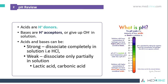Acids are generally hydrogen donors, and bases are hydrogen ion acceptors or they give up hydroxide ions in solution. Acids and bases can be either strong or weak. In strong acids or bases, they dissociate completely, while weak acids or bases dissociate partially in a solution.